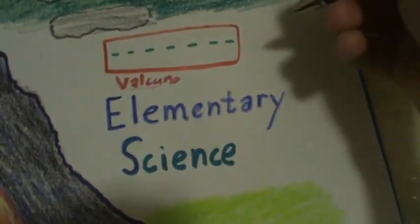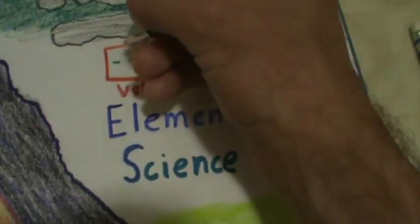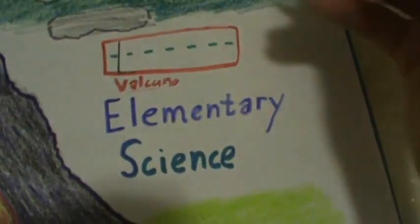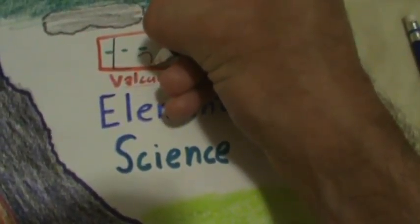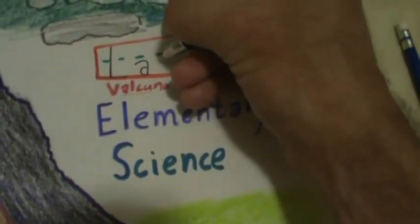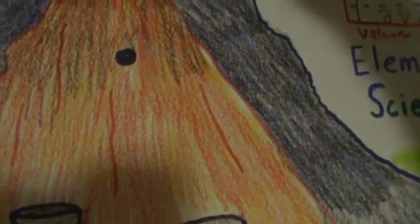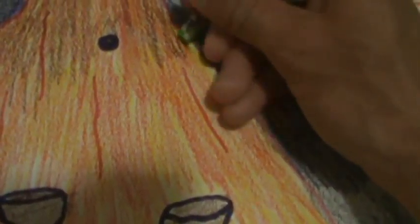I basically used whatever colors were available on Microsoft Paint and worked as much as I could to make it look realistic — working with orange and red to show what lava would look like coming out of the volcano with the rocks. Anyone can think of volcanoes in Hawaii, Africa, or various other places around the world.